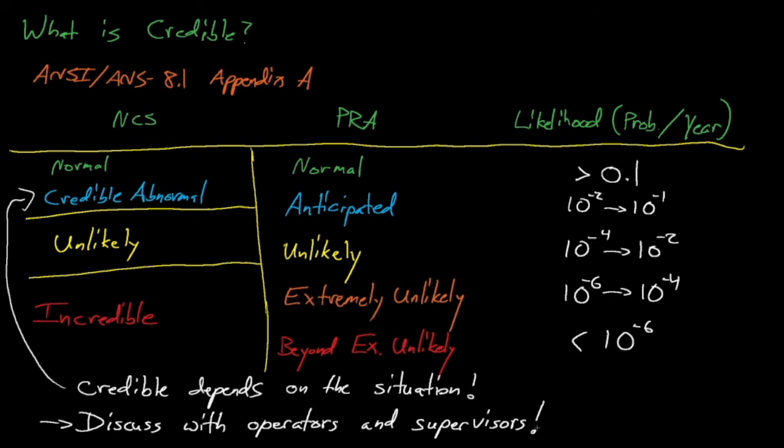This concludes our lecture on process analysis, the double contingency principle, and determining credible upset conditions. This knowledge might feel a little theoretical right now, but we'll exercise it soon in some homework assignments. Our next lecture will review the Tokaimura criticality accident and we'll review the kinetics of a supercritical transient.